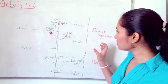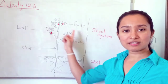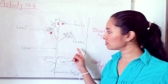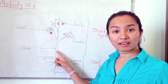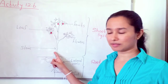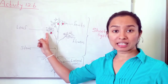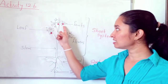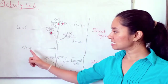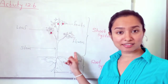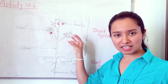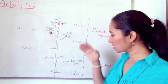In the shoot system, there are several organs. The stem is an organ of the shoot system. Leaves, fruits, and flowers are also organs. So stem, leaves, fruits, and flowers are the organs we can see in the shoot system of the plant.